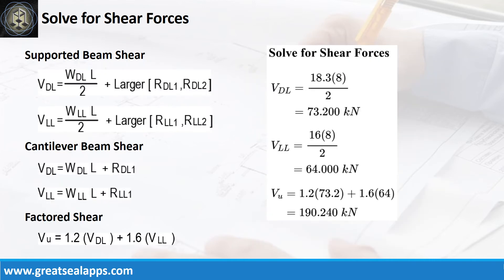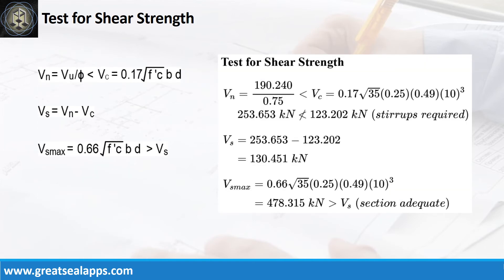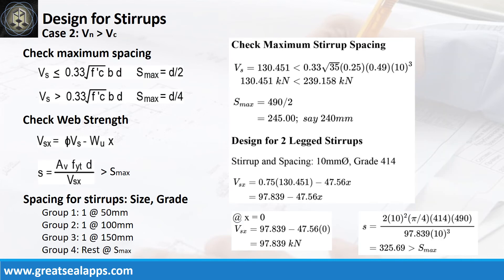The shear force from dead load is 73.2 kN and live load is 64 kN, for a factored shear force of 190.24 kN. The nominal shear force is 253.653 kN, greater than 123.202 kN concrete capacity. Additional shear capacity from stirrup is 130.451 kN, less than 478.315 kN maximum stirrup capacity. The maximum stirrup spacing is 240 mm, with web strength at face of support of 97.839 kN and initial spacing at 325.69 mm.